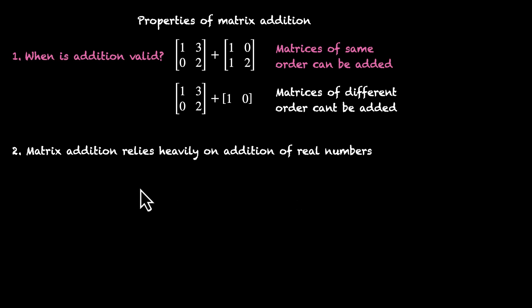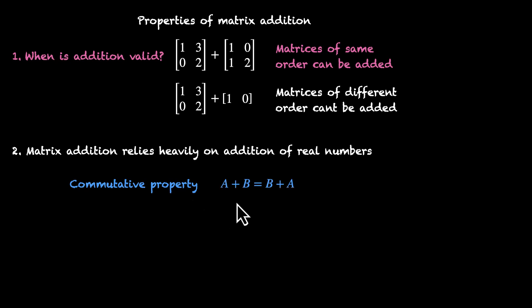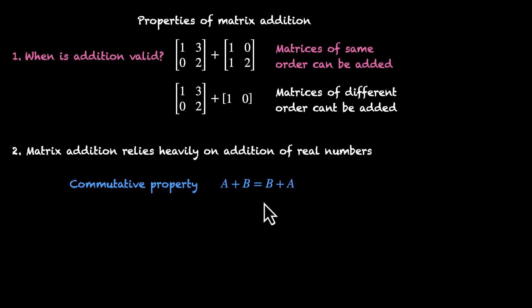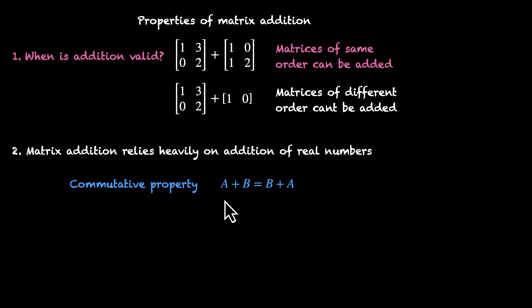Now let's look at the properties. We have the commutative property, which says if you add two matrices, you can add them in any order. If you have two matrices A and B, you can either add A to B or add B to A. Notice that this works for real numbers as well — if you have two real numbers, five and seven, you can either add five to seven or seven to five.